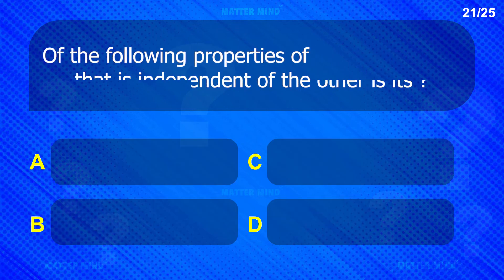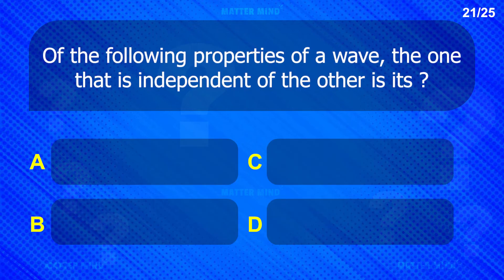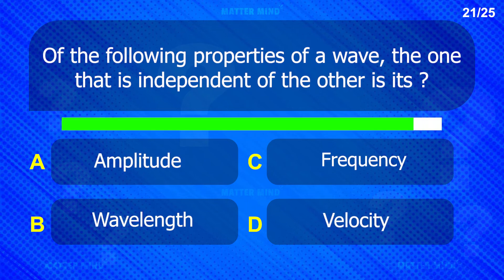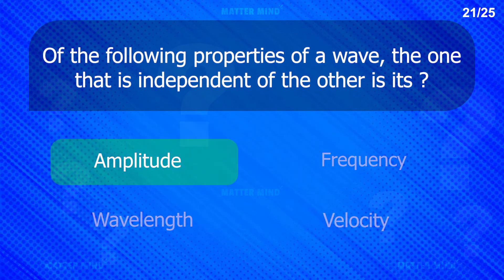Of the following properties of a wave, the one that is independent of the other is its amplitude.